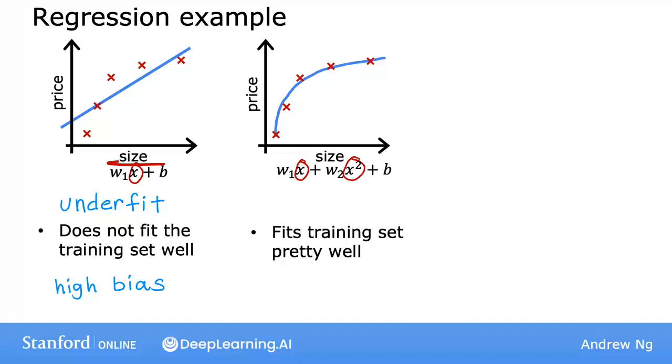So if you're a real estate agent, the idea that you want your learning algorithm to do well, even on examples that are not on the training set, that's called generalization. Technically, we say that you want your learning algorithm to generalize well, which means to make good predictions, even on brand new examples that it has never seen before. So this quadratic model seems to fit the training set, not perfectly, but pretty well. And I think it will generalize well to new examples.